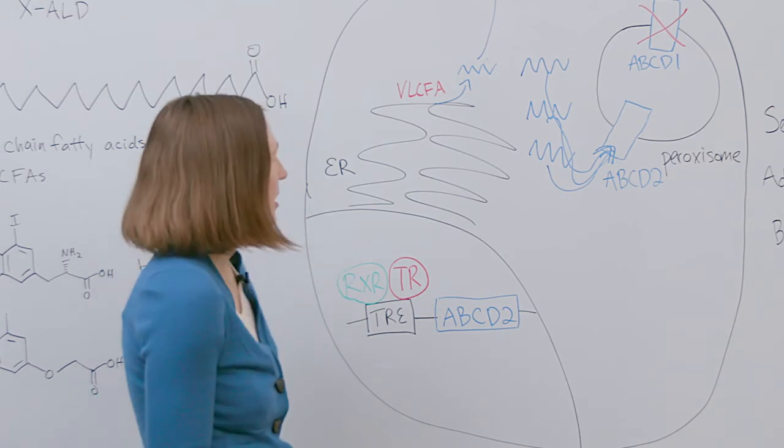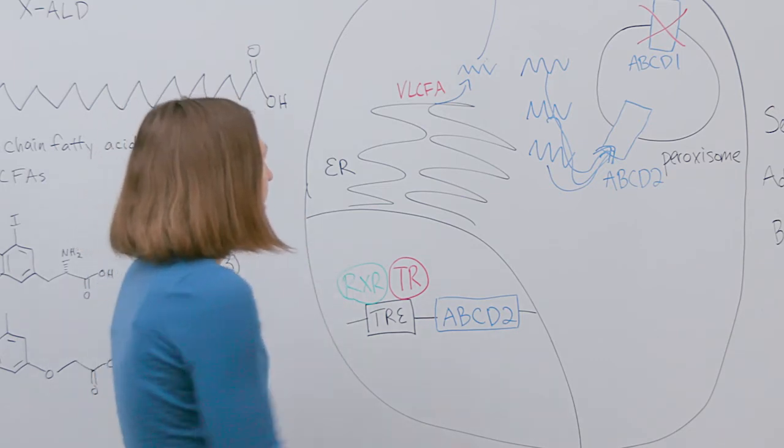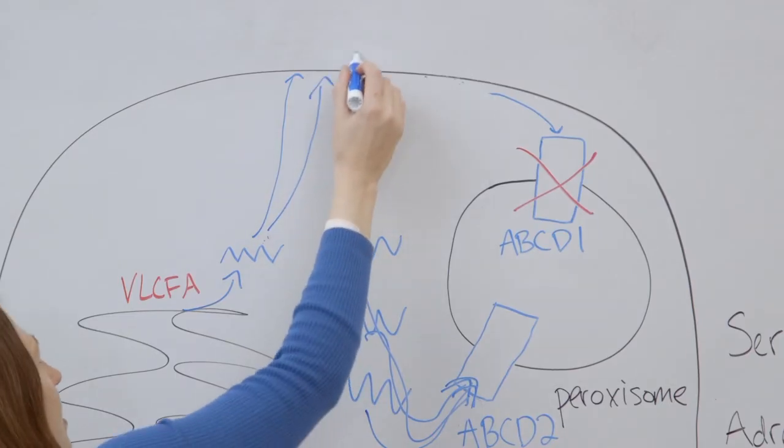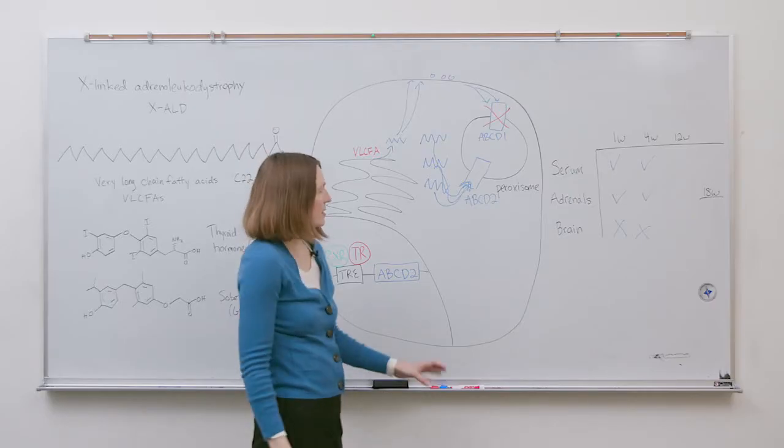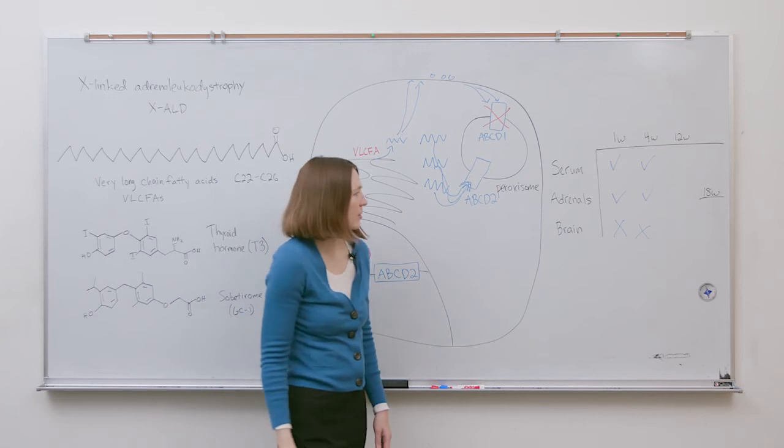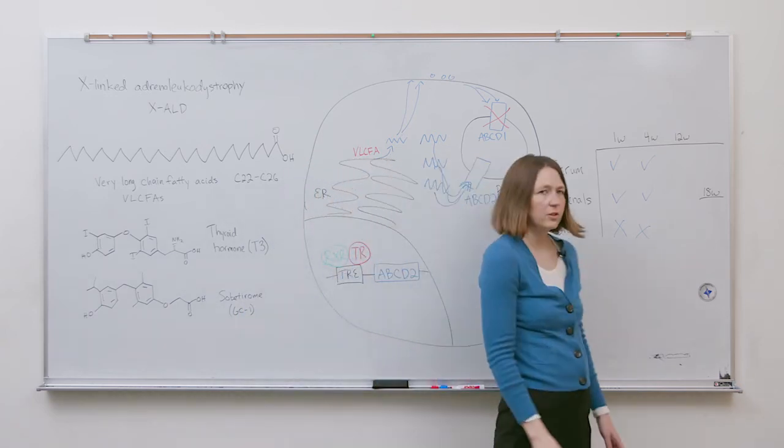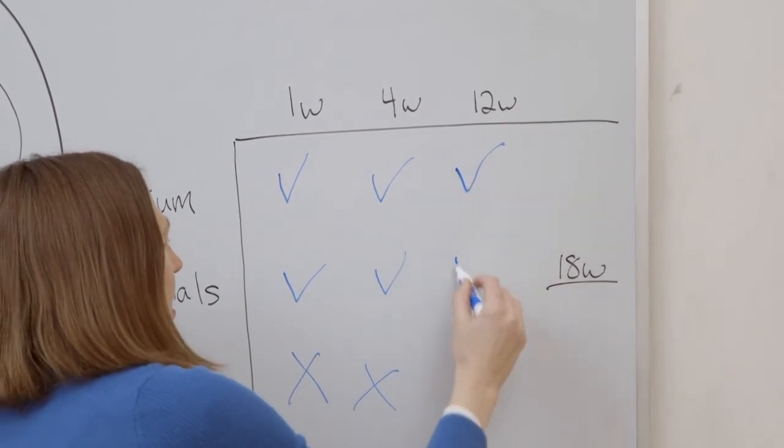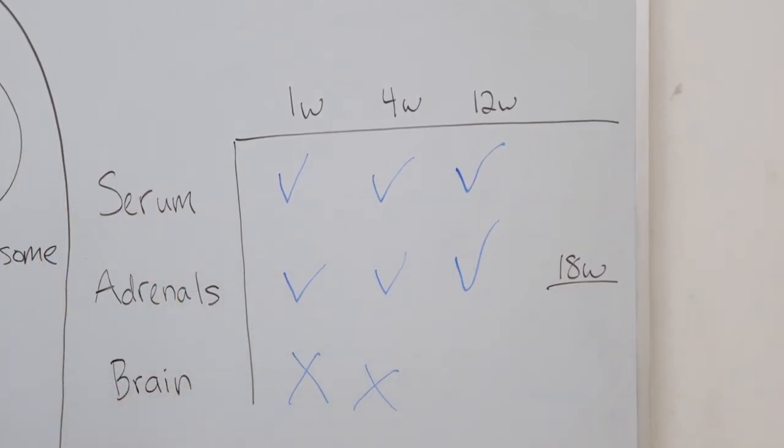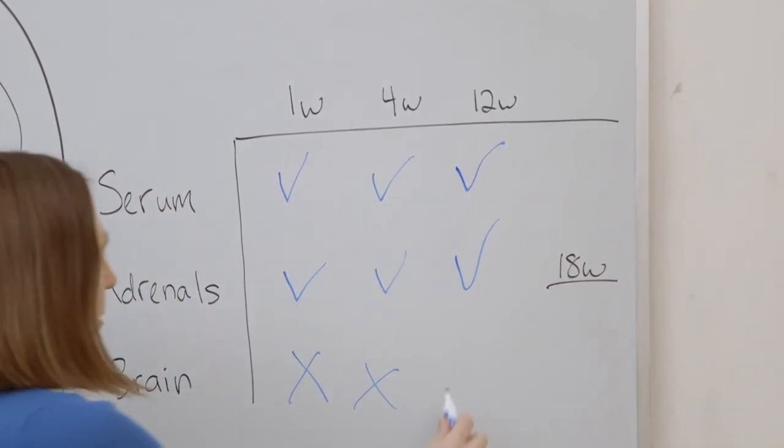This led us to postulate that VLCFAs in the brain have longer half-lives than in peripheral tissues. So to test this idea we tested the mice for 12 weeks and then measured the VLCFAs and this time we observed lowering in the serum and adrenal glands and this time excitingly we observed lowering in the brain.